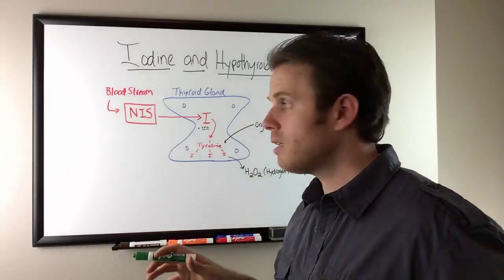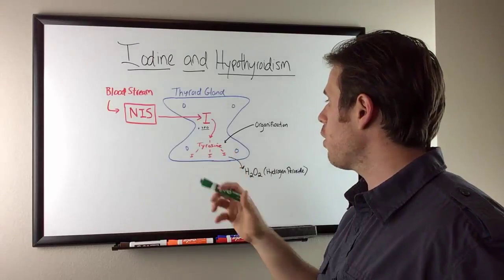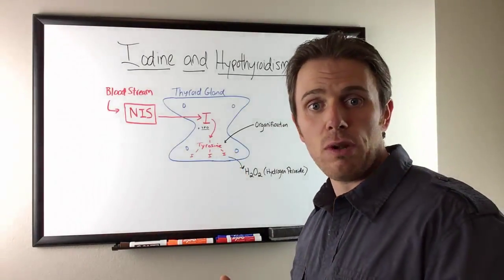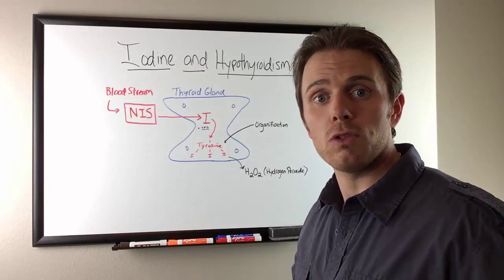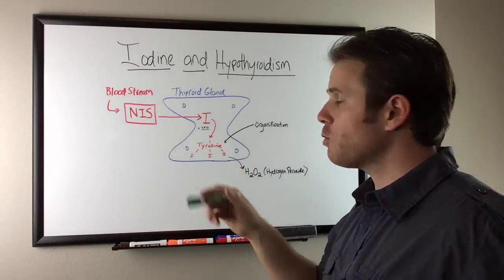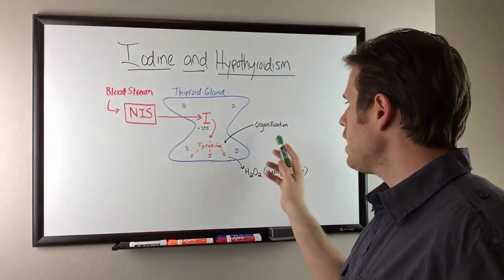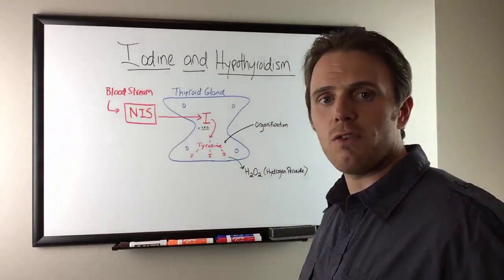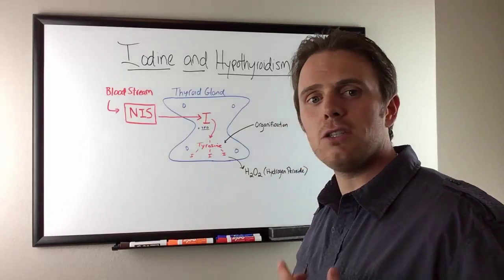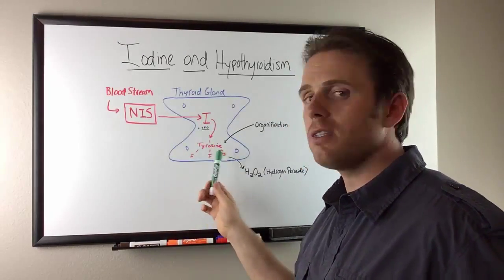That iodide is then taken and bounded to an amino acid called tyrosine. Think of T4 and T3. These are respective thyroid hormones. The T really stands for tyrosine. We have this enzyme called thyroid peroxidase, TPO. And this process here is called organification, where we're taking iodide, we're binding it to tyrosine via this TPO enzyme, and we're making T4.